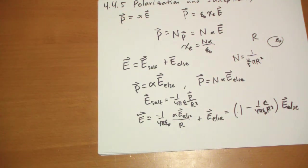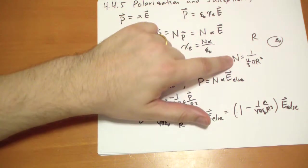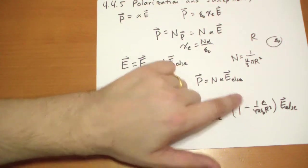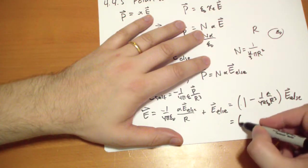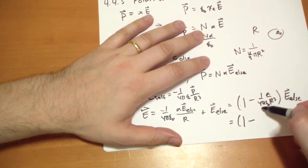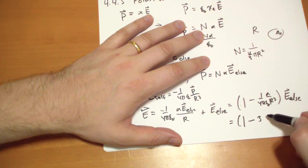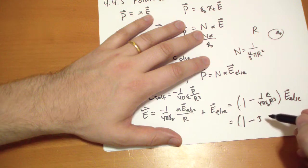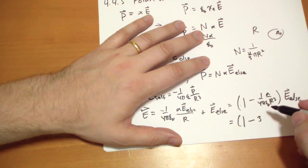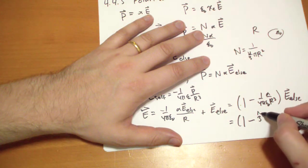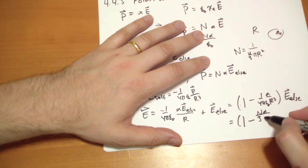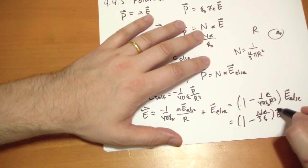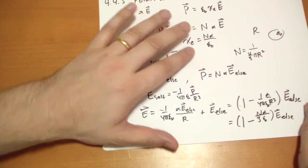And using this equation to substitute N for R, we had 4 thirds pi, so we needed 3 on the bottom. So we have N alpha over 3 epsilon-naught. That's the total electric field.